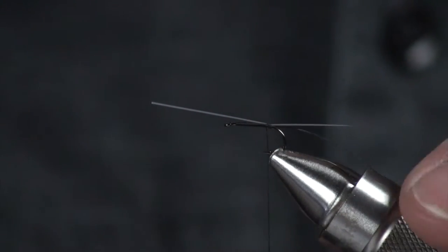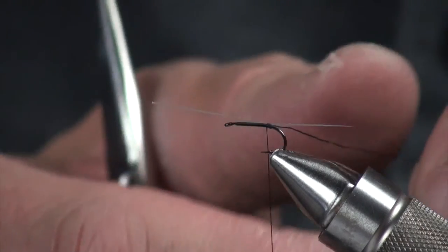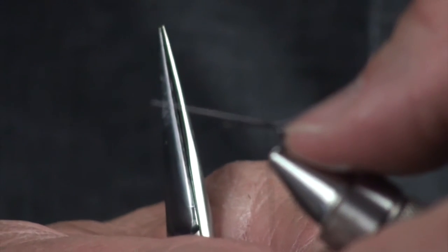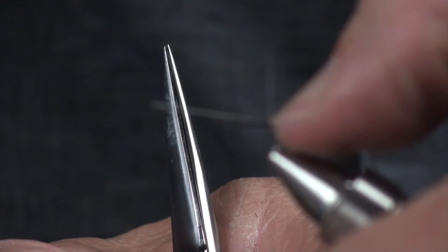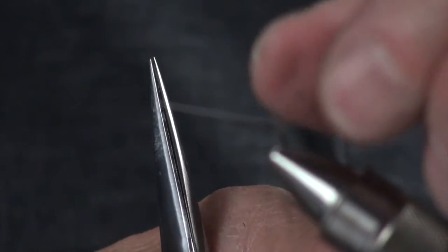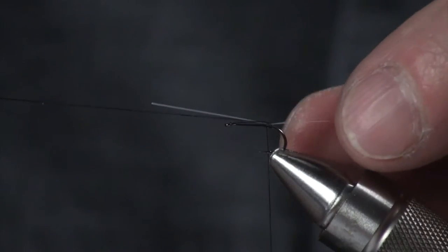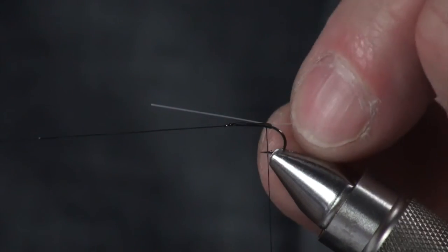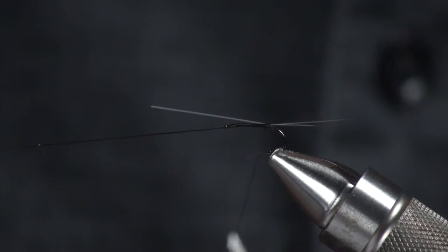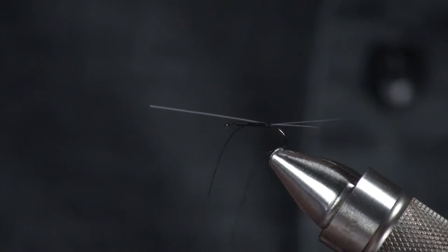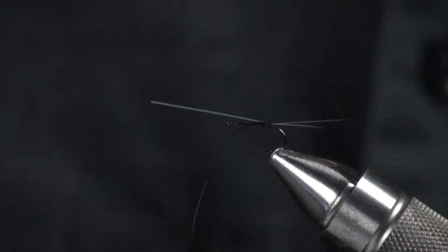Now at this point what I'm going to do is come in here, split that tail with my thumbnail, and then bring that thread tag right up the middle and tie that in.